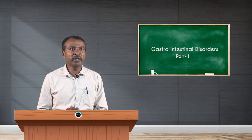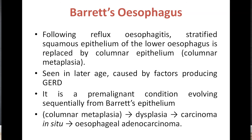There is a condition called Barrett's esophagus. Following reflux esophagitis, the stratified squamous epithelium of the lower esophagus is replaced by columnar epithelium, also called columnar metaplasia. It is seen in later age and is caused by factors producing GERD (gastroesophageal reflux disease). It is a pre-malignant condition progressing sequentially from Barrett's epithelium to columnar metaplasia, then dysplasia, then carcinoma in situ, and finally esophageal adenocarcinoma.